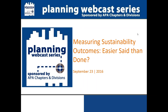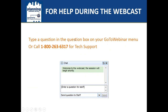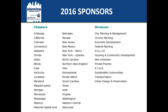Today is September 23rd, 2016, and you're going to see the presentation 'Measuring Sustainability Outcomes: Easier Said Than Done.' For help during today's webcast, you can type a question into the question box on your GoToWebinar screen, or call 1-800-263-6317 for technical support. For content-related questions, type those into the question box located in the webinar toolbar. We'll answer those as time allows at the end of the presentation.